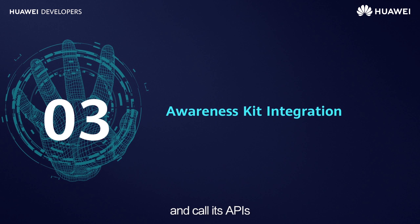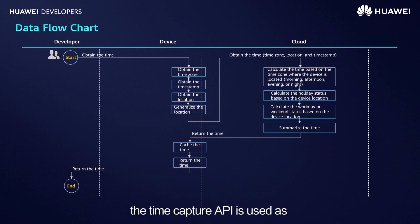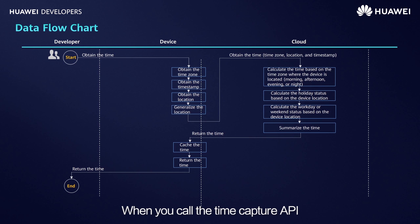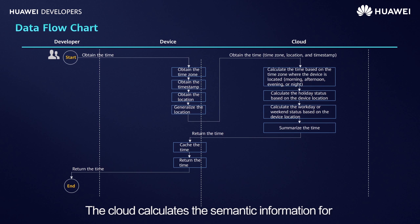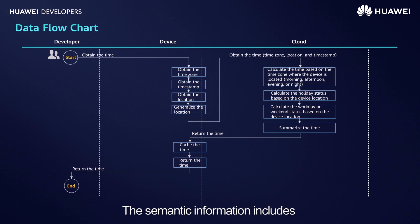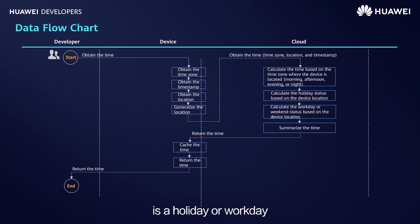Next, let's see how to integrate Awareness Kit and call its APIs. The Time Capture API is used as an example to describe the data flow. When you call the Time Capture API, Awareness Kit in your app obtains the time zone, timestamp, and geographical location of the user device and uploads the data to the cloud. The cloud calculates the semantic information for the current time and returns it to the user device. The semantic information includes the time segment of the day and whether the current day is a holiday or workday. After obtaining the information, the user device caches it and returns it to you.